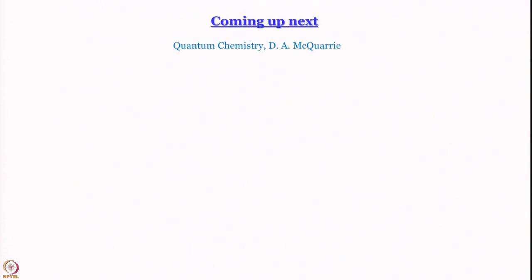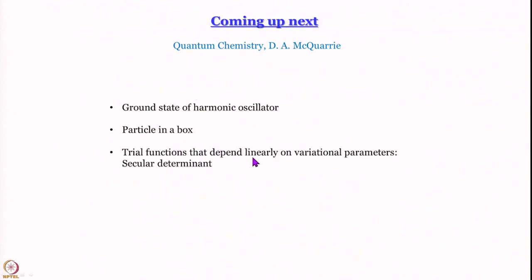That is what we have learned today, following McQuarrie's Quantum Chemistry book. We will also use Pilar's book. What we will do next, now that we have proved this theorem, is see how we can get an expression for the ground state energy of the harmonic oscillator and the energy levels of a particle in a box using the variation method. We will also show that for trial functions that depend linearly on variational parameters, we get a secular determinant, which becomes a cornerstone in solving variational problems. Finally, we will use both the variation method and perturbation method for multi-electron atoms. Stay tuned.